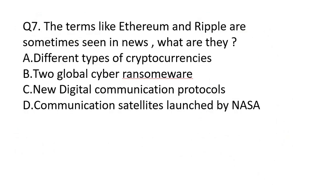Next question: The terms Ethereum and Ripple are sometimes seen in news — what are they? Different types of cryptocurrencies, global cyber ransomware, new digital communication protocols, or communication satellites launched by NASA? The correct answer is A — different types of cryptocurrencies.